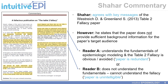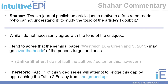Shahar poses the question: does a journal publish the Table 2 Fallacy paper just to motivate a frustrated reader, who cannot understand it, to study the topic? He says he doubts this. While I do not necessarily agree with the tone of Shahar's critique, I tend to agree that the seminal paper by Westreich and Greenland may in fact go over the heads of its target audience.